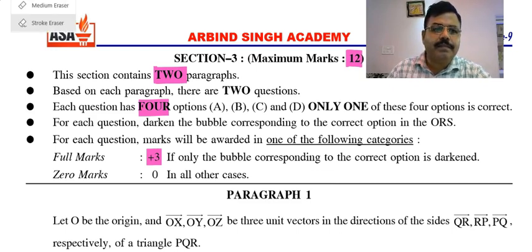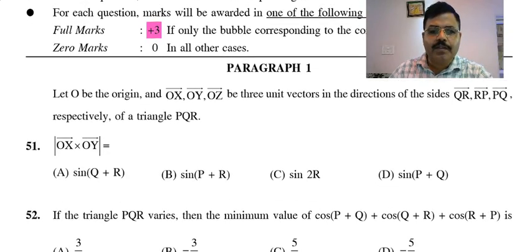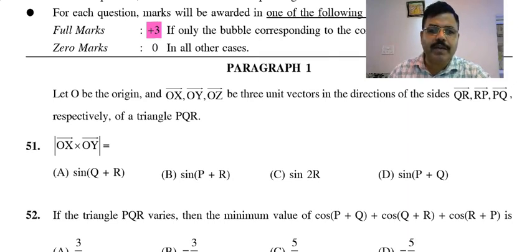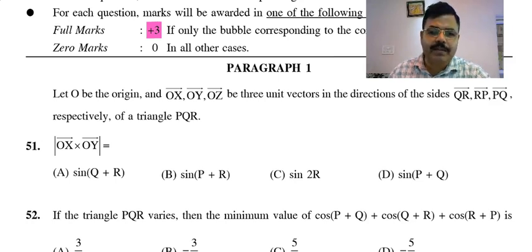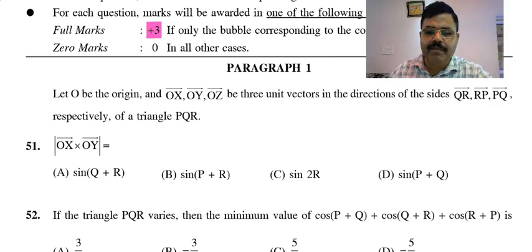The first paragraph is: Let O be the origin, and OX, OY, OZ be three unit vectors in the direction of the sides QR, RP, and PQ respectively of triangle PQR. Given OX dot OY, the options are provided. As triangle PQR varies, find the minimum value. Let's see how to solve this question.